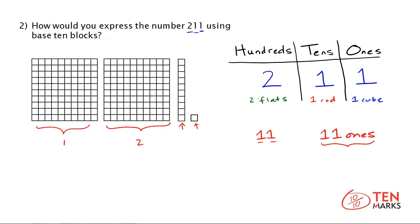And if you think about the number as 11 ones, then when you go to model this number, you would have the two flats still for the hundreds, but instead of one rod and one cube, you would just have 11 ones. And let's see that.